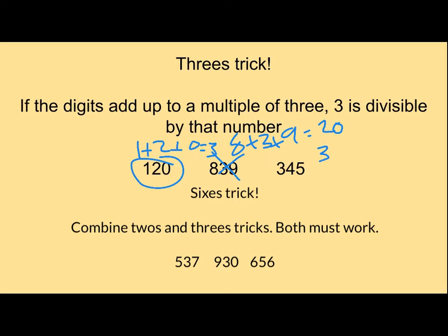And 3 plus 4 plus 5, that will give me 12. So this one does work because 3 is a factor of 12, or 12 is a multiple of 3.